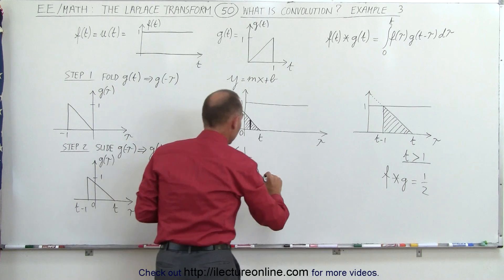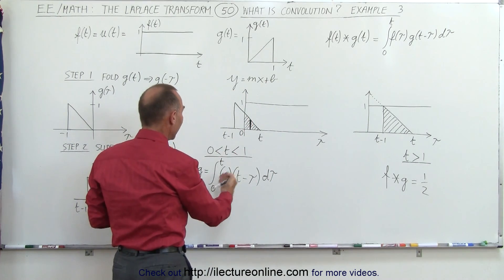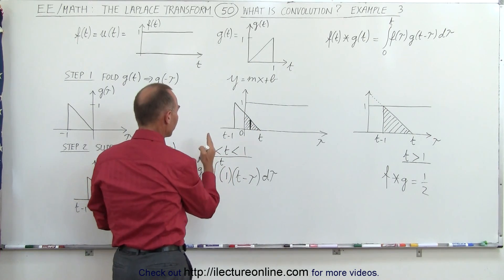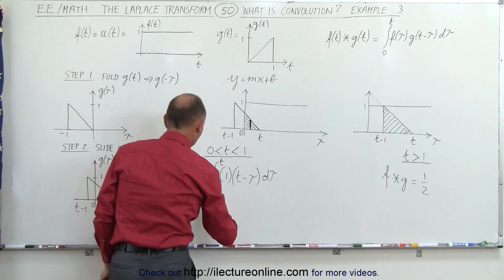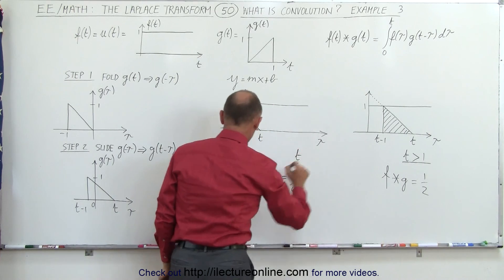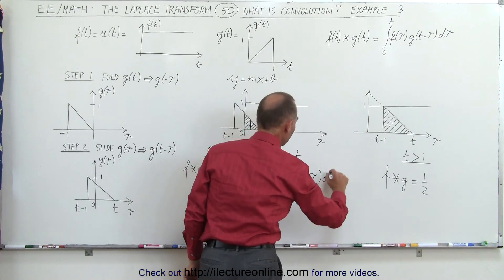And then we multiply the times d tau. And so we can integrate this, and then get the convolution of the portion from time equals 0 to time equals 1. So when we multiply this out, this is equal to the integral from 0 to t, of t minus tau times d tau.